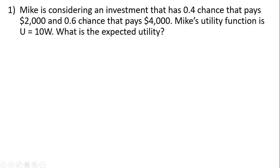Mike is considering an investment that has a 0.4 chance that pays $2,000 and a 0.6 chance that pays $4,000. Mike's utility function is U equals 10 times W. What is the expected utility?